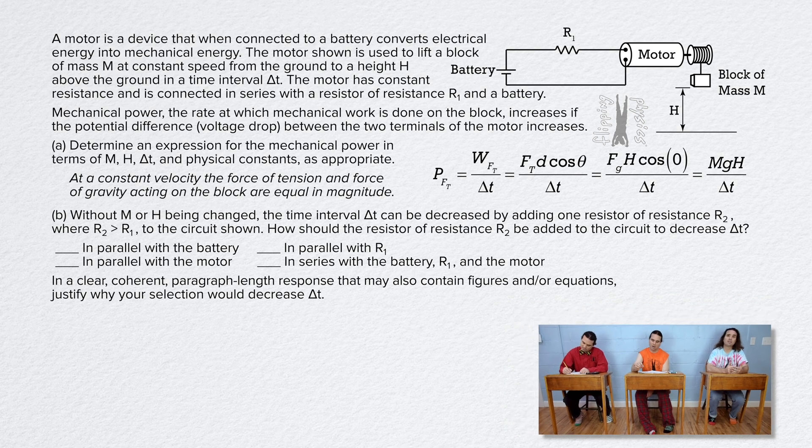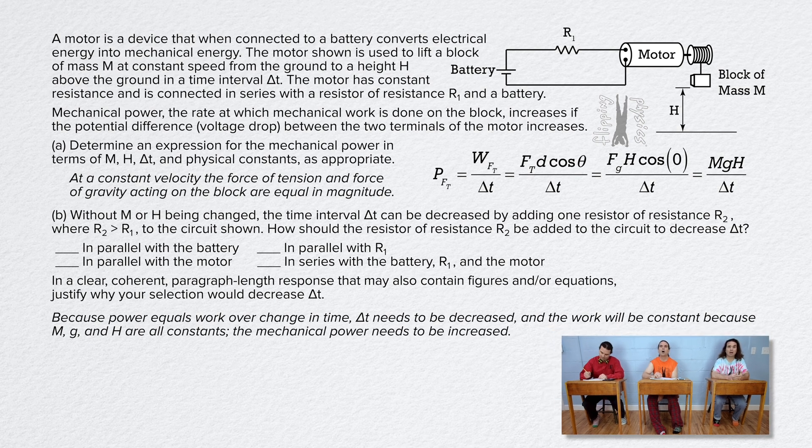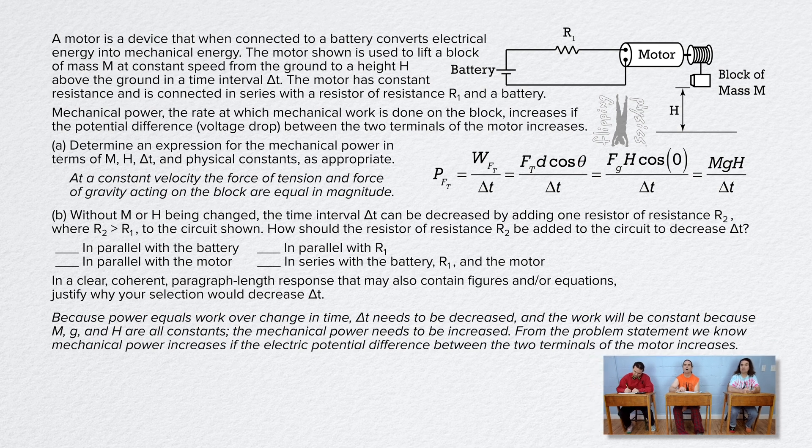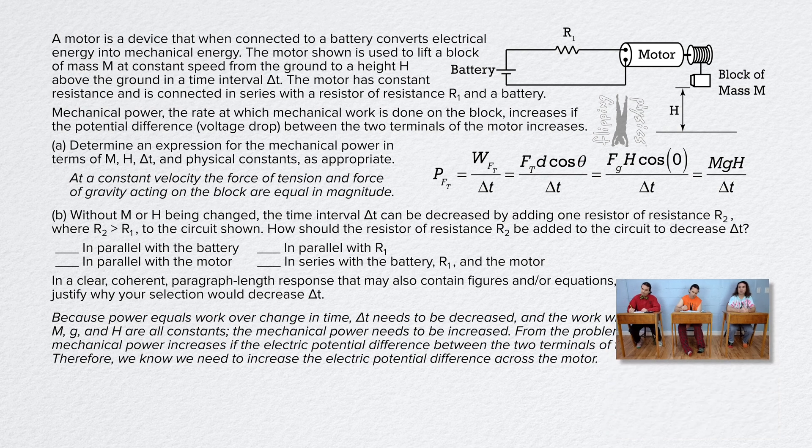Right, because power equals work over change in time, delta t needs to be decreased and the work will be constant because M, g, and H are all constants. The mechanical power needs to be increased. From the problem statement, we know mechanical power increases if the electric potential difference between the two terminals of the motor increases. Therefore, we know we need to increase the electric potential difference across the motor.